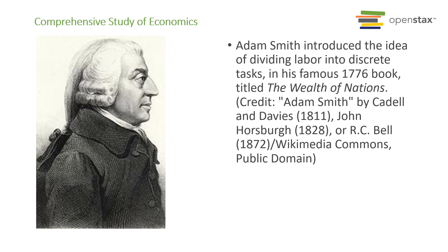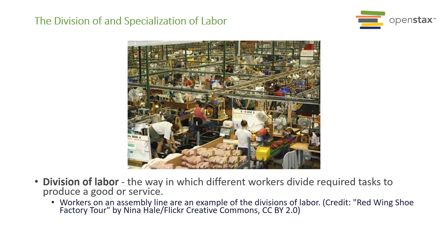Soon after 1776, we saw the Industrial Revolution, where many factories formed and specialization of labor came to fruition. If you remember what you learned in US history — Ford and the Model T — that was division of labor. What made Model T's production special was that it was the first to introduce the assembly line into mass production. Workers were no longer working on every single part of production; they specialized in one part and became very good at it, making the company more efficient at producing goods and services. This is what we call the division of labor — the way different laborers divide required tasks to produce goods and services.